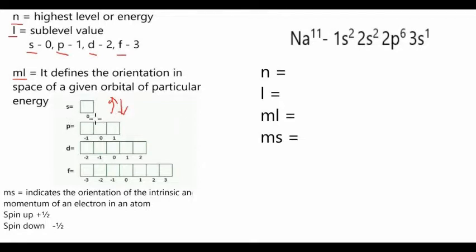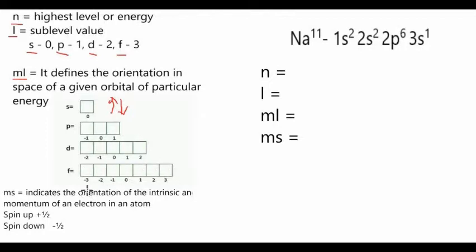For s, the ml value of the box is zero. For p, the values are negative one, zero, and one — each box has a corresponding value. For the d level, we have five boxes with values negative two, negative one, zero, positive one, and positive two. For f, we have seven boxes because the f sublevel can carry up to 14 electrons.